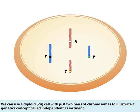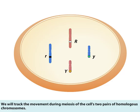We can use a diploid, or 2N, cell with just two pairs of chromosomes to illustrate a genetics concept called independent assortment. We will track the movement during meiosis of the cell's two pairs of homologous chromosomes.